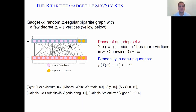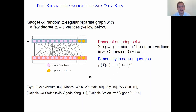The difference between even and odd levels shows up as a difference between the plus and minus sides of the bipartite gadget. For an independent set, we define its phase as the side with more vertices: plus if sigma has more vertices on the plus side, minus otherwise. Typically, an independent set drawn from the Gibbs distribution on this graph is unbalanced — a linear fraction more vertices appear on one side than the other. This bimodality means each phase appears with probability approximately one half, giving a binary behavior that allows you to encode binary CSP.